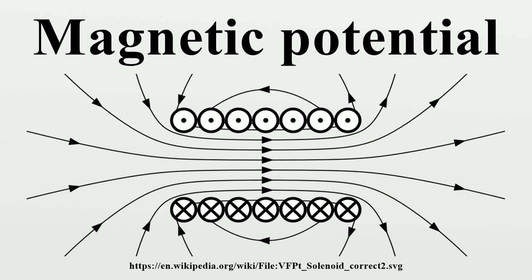In simple cases, where the fields at position vector R and time T are calculated at distant position R' at an earlier time T'. The location R' is a source point in the charge or current distribution. The earlier time T' is called the retarded time.